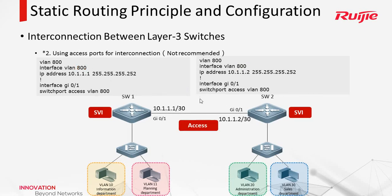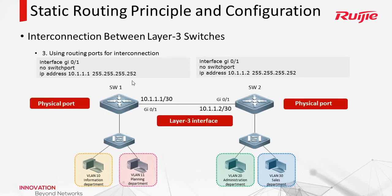The second way: we can change this link to access mode, though this is not recommended. In this way, only layer 3 is used. The third way is using routing ports for interconnection. In this way, the route switch works just as a router. Here is the layer 3 interface, and we configure the IP address.